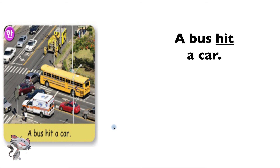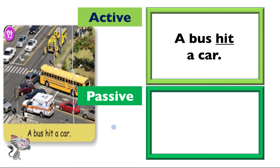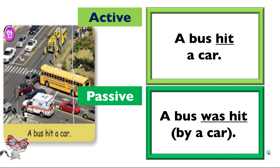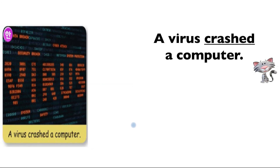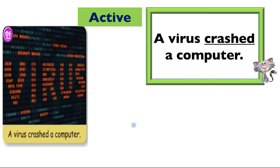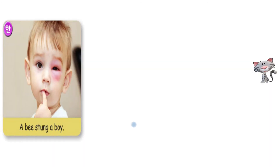'A bus hit a car' - that is the active sentence. And the passive is: 'A car was hit by a bus.' It's confusing because hit's past and past participle form are all the same - hit, hit, hit - it's irregular. So irregular verbs are difficult. 'A virus crashed a computer.' 'A computer was crashed by a virus.' That was the homework - very good, Yonghee. Some more homework for you guys.